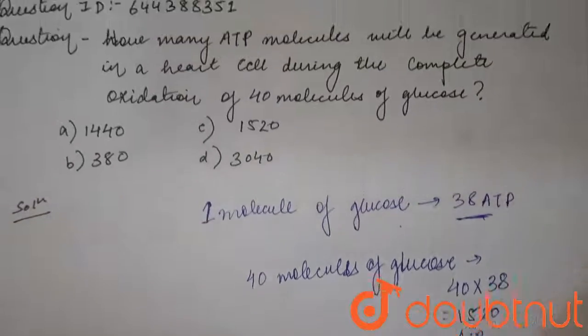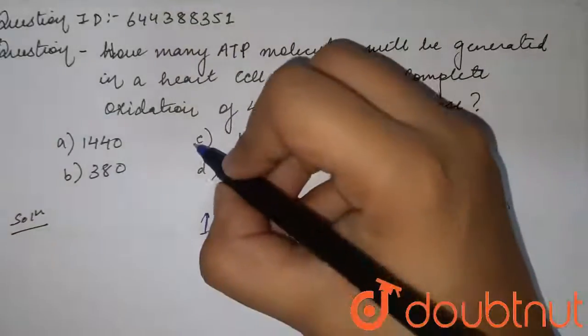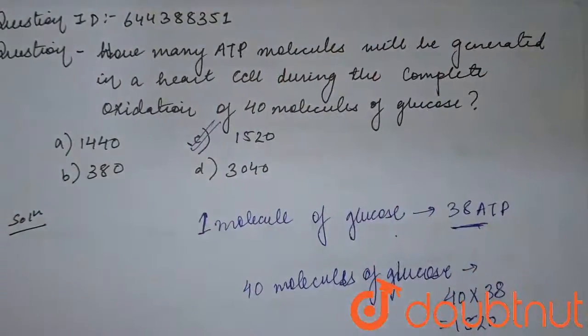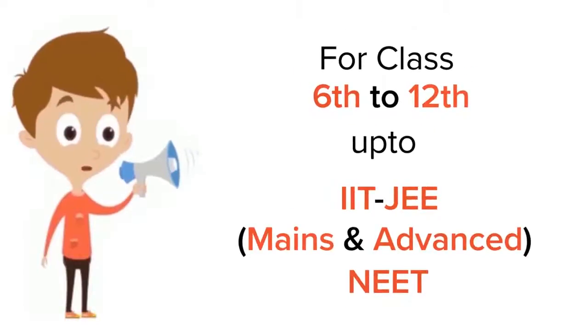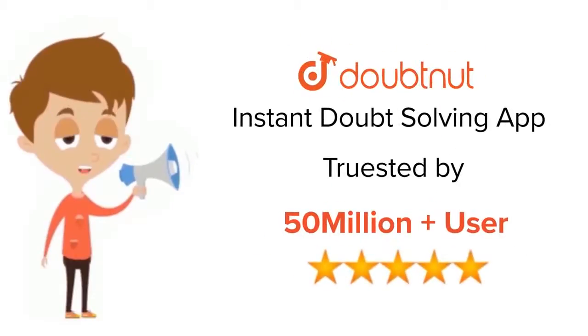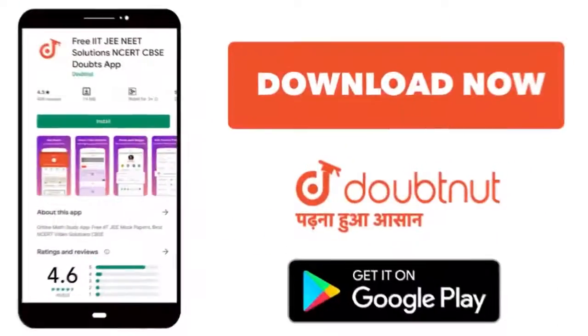So our answer to the question would be option C: 1520. Thank you. For class 6 to 12, IIT-JEE and NEET level, trusted by more than 5 crore students. Download Doubtnet app today.